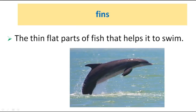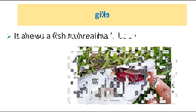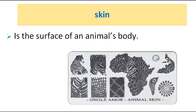Fins: the thin, flat part of a fish that helps it to swim. Gills: they allow a fish to breathe. Skin: the surface of an animal's body.